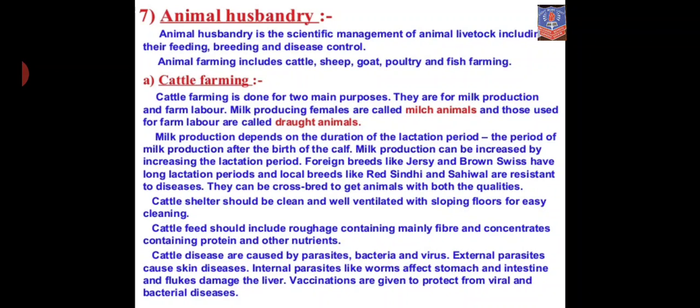Milk production depends on the duration of the lactation period. The lactation period is the period of milk production after the birth of the calf. Once a cow gives birth, she starts giving milk, and the period from that point until she stops is the lactation period. Milk production can be increased by increasing the lactation period.